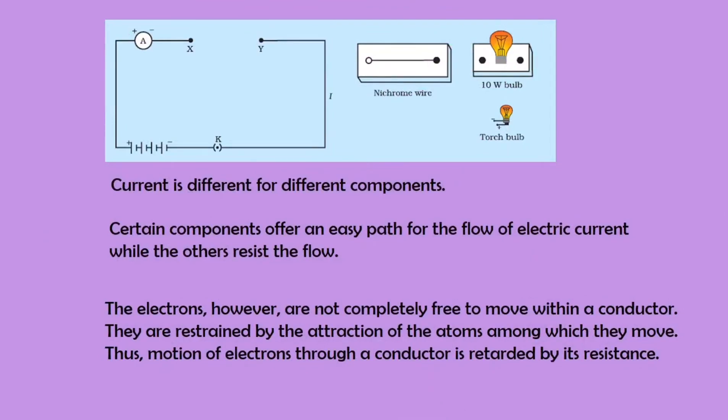Next activity helps us to explore how current varies for different components. This circuit consists of a battery, a key, an ammeter and a gap. In this gap, one by one, we are going to connect the three components given, i.e. a nichrome wire, a 10 watt bulb and a torch bulb and we are going to measure the ammeter reading. It is found that the current is different for different components because certain components offer an easy path for the flow of electric current while the others resist the flow. That is because of the internal resistance present in it.